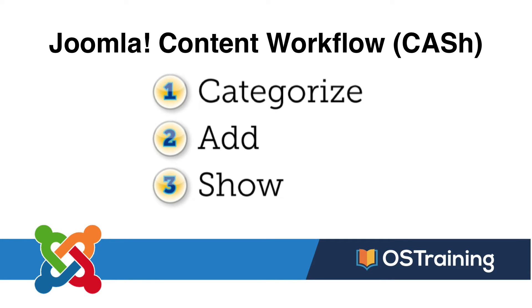For instance, a blog could be a category on its own, and then you might have subcategories — say for technology, web, or products even. You can have unlimited nested categories in Joomla. Once you have your category structure set up, then you add articles.